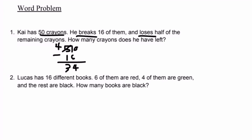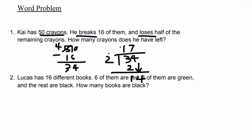However, he loses half of his remaining crayons. Losing half indicates we need to divide. We divide 34 by 2 to find how many are left. 2 goes into 3 one time — 2 times 1 equals 2, 3 minus 2 equals 1. Bring down the 4. 2 goes into 14, 7 times — 7 times 2 equals 14, remainder 0. Therefore, Kai has a total of 17 crayons after breaking 16 and losing half of the remaining.